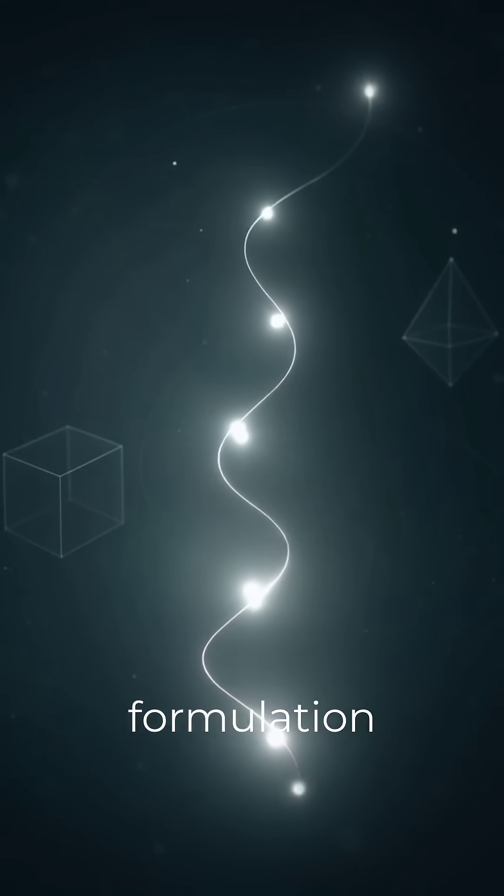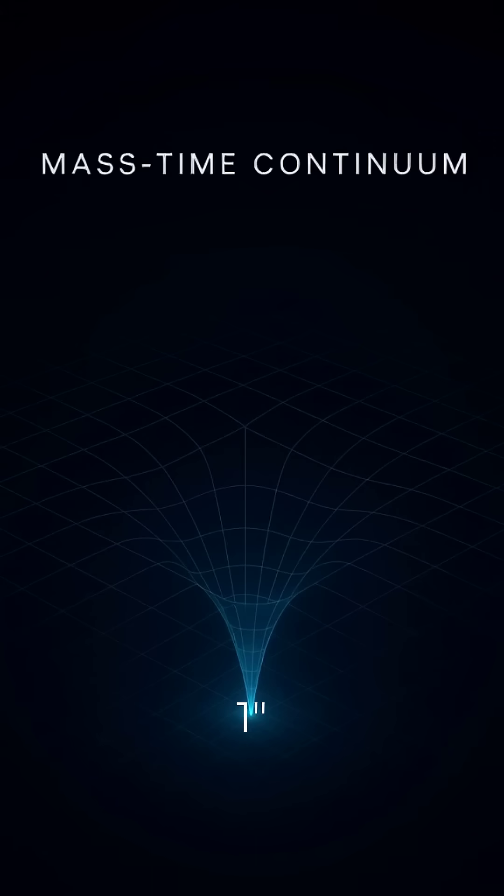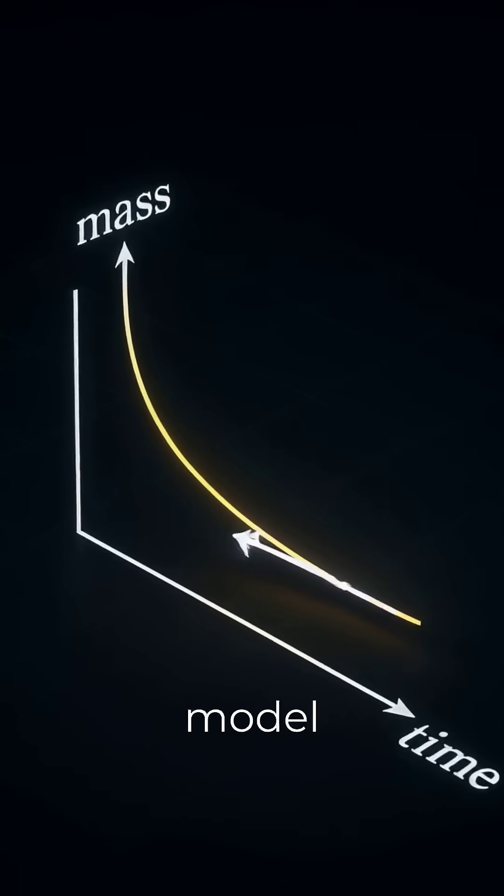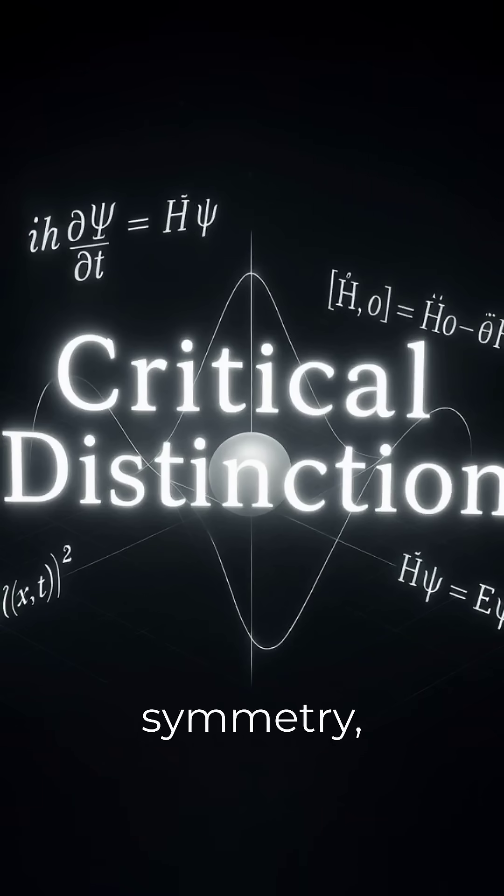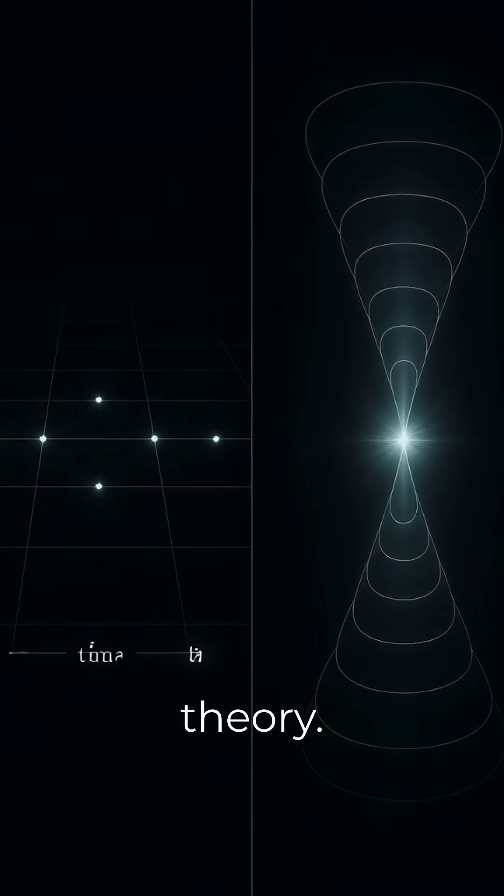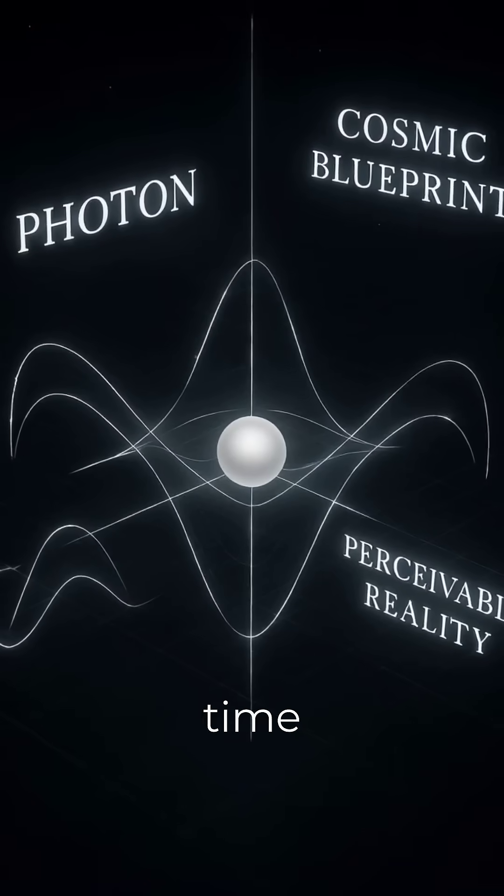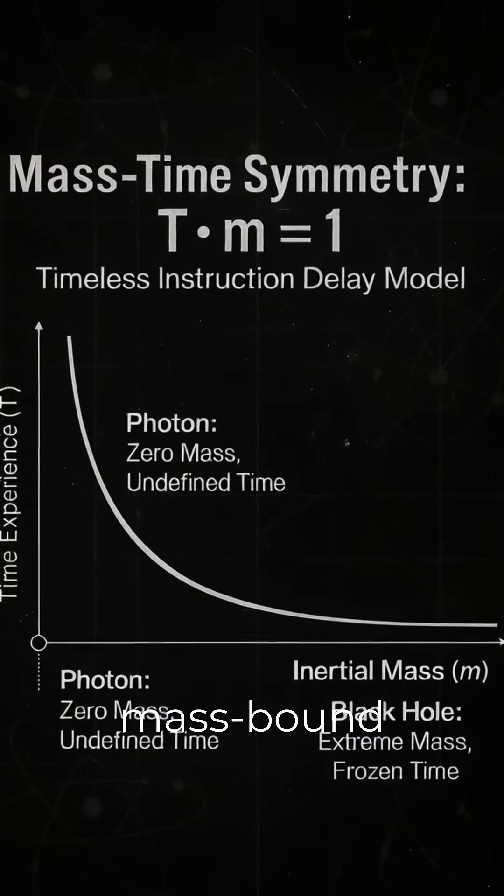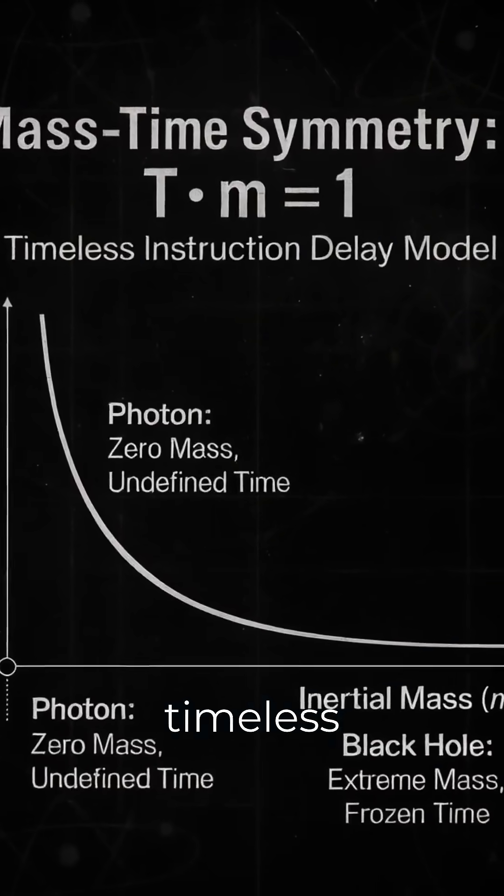The formulation T times m equals one is introduced in the Timeless Light model as a novel mass-time symmetry unrecognized in classical or quantum theory. It reframes time as an emergent property of mass-bound delay in resolving timeless photon instructions.